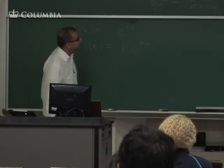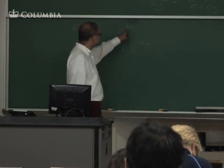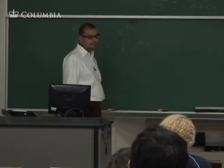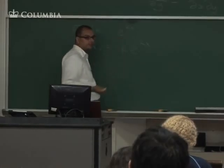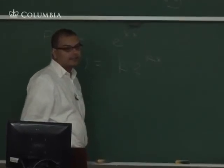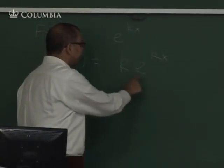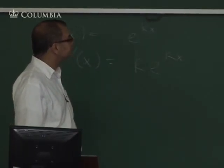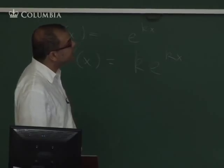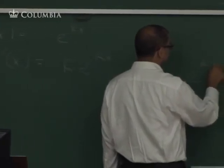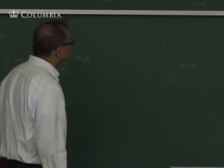So e to the kx — its derivative is the derivative of the inside function times itself. The derivative of e to the x is just e to the x, and the derivative of the inside function kx is k, so you get k times e to the kx. Now suppose the derivative is actually e to the kx.